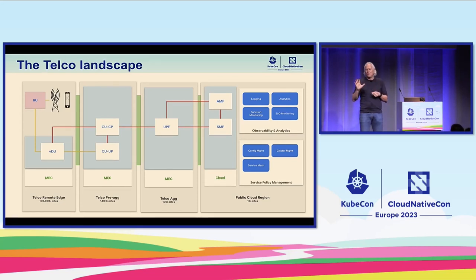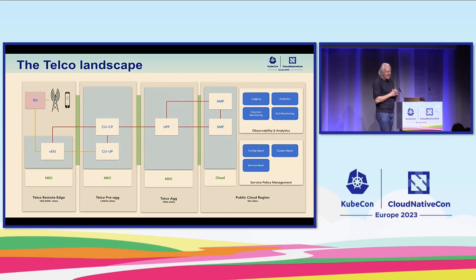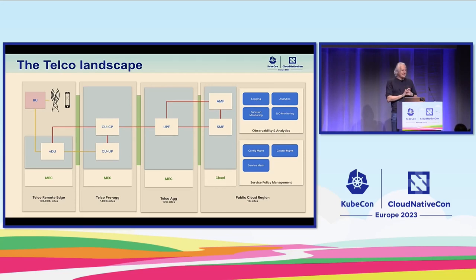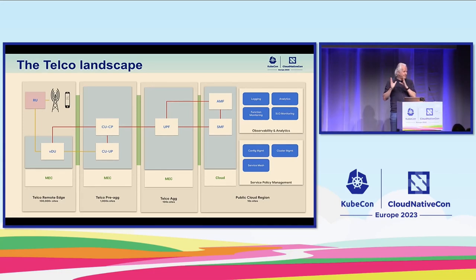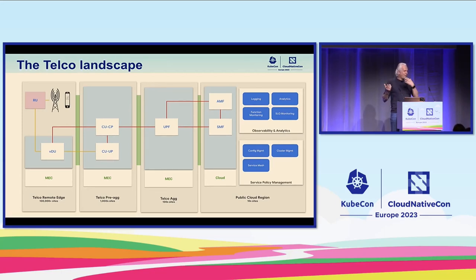How many in the room are from the Telco space? So about half the room. There are a bunch of acronyms here which probably don't mean anything to the rest of you. When I talk about UPF, SMF, and AMF, think of them as apps — we call them network functions. And when we talk about manifests, we mean the manifest to deploy or configure such an app.